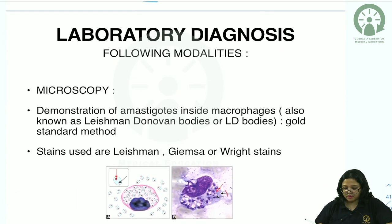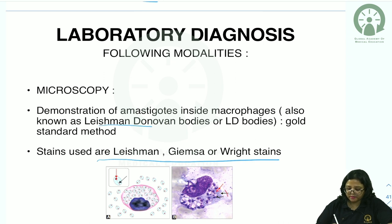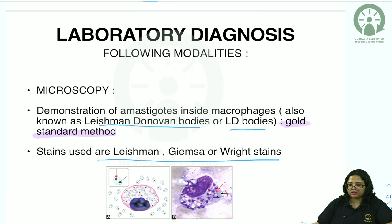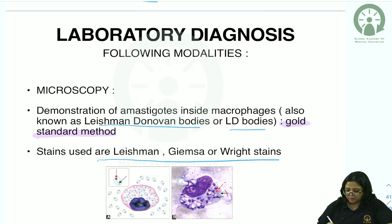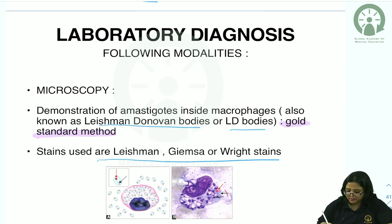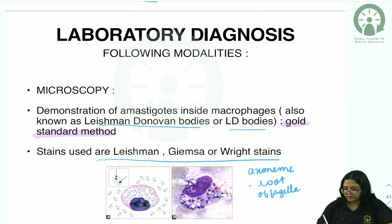Microscopy is the mainstay of diagnosis. Staining with Leishman, Giemsa, or Wright stain reveals Leishman-Donovan (LD) bodies — the gold standard. LD bodies are found in splenic aspirate or bone marrow. The bone marrow smear stained with Giemsa shows nucleus and rod-shaped kinetoplast inside macrophages. The kinetoplast is multiplicated mitochondrial DNA; the axoneme is the root of the flagella.